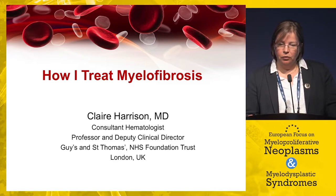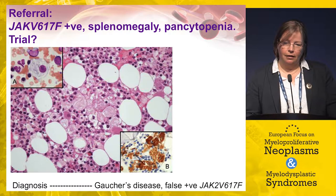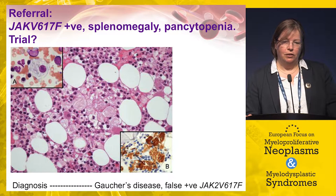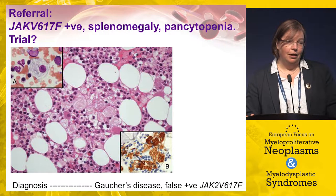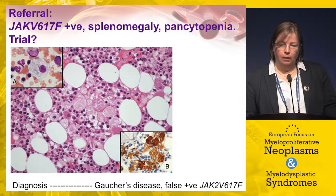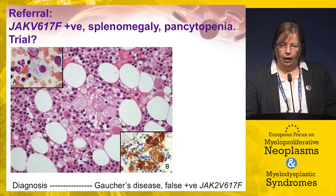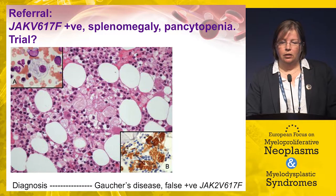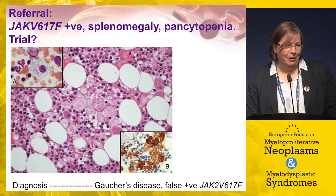I would like to start with a clinical case. The first thing I think about when managing my patients — even if they've been sent to me for an opinion — is diagnosis. This patient was JAK2V617F positive with splenomegaly and pancytopenia, referred about five years ago for possible JAK inhibitor trials. We requested a bone marrow biopsy for review, and this patient did not have myelofibrosis — she actually had Gaucher's disease, and the JAK2V617F molecular test was a false positive.